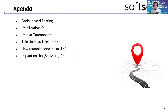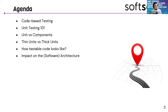So what is our agenda for today's talk? First, we are going to give a very small introduction about code-based testing and unit testing 101. I'm aware that this talk is aiming for intermediate-plus audience members, but it's always a good idea to have a refresh of the concepts we are going to walk through. Naturally, after the unit testing 101, we're going to talk about units and components, and what we understand about thick units and thin units in the unit testing world. We'll then see examples of how testable code looks like, and discuss the impact of testable code on software architecture.